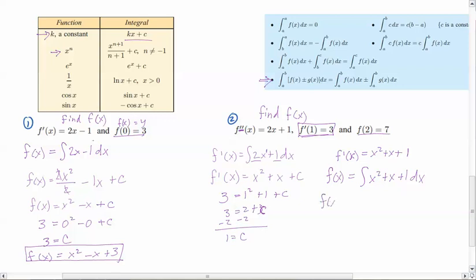So f of x equals, now the integral of x squared would be x to the third, but then I've got to put the 3, divide by 3. Divide by the n plus 1, or put that fraction in front. Plus x squared, over 2, or times 1 half, plus x plus c.